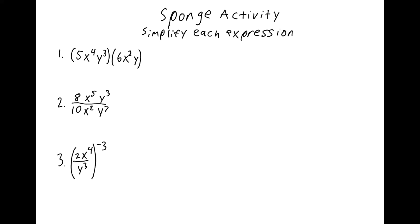That's it for the lesson — now time for the sponge. I want you to simplify each expression. First, we are multiplying 5x to the 4th, y to the 3rd and 6x squared, y. Second, we're dividing 8x to the 5th, y to the 3rd and 10x squared, y to the 7th. And number 3, we've got 2x to the 4th over y to the 3rd, raised to the negative 3rd power. Please take notes on the entire lesson and attempt the sponge. Also, please remember to circle on the scale where you think you are at the end of the lesson, and have a good night.